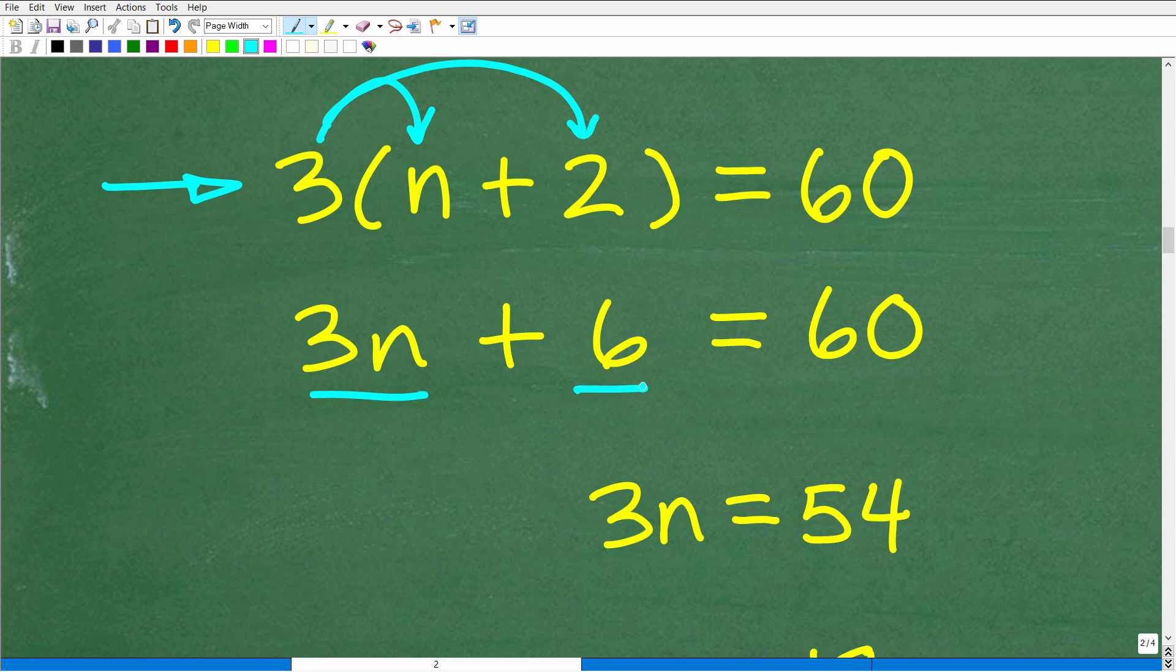Now, if you're a little bit unsure of the steps to solve an equation like this, what we're talking about here is basic linear equations. And I'm going to leave links to my most popular courses in the description as well. I teach all this stuff in my pre-algebra or Algebra 1 course because that's kind of the level we're talking about here. But anyways, that's the first thing we need to do is take this 3 and multiply it by n and 2. So, we have 3n plus 6 is equal to 60.